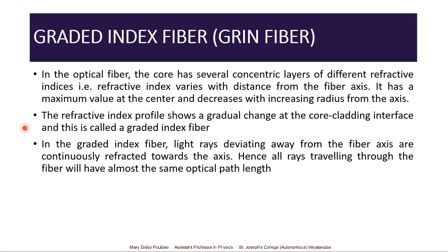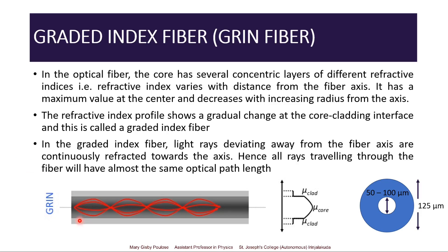In this graded index fiber, light rays deviating from the fiber axis are continuously refracted towards the axis. Hence all the rays traveling through the fiber will have almost the same optical path length. The refractive index of the core is maximum at the center and continuously decreases towards the core-cladding interface — there is no step discontinuity, it is gradually decreasing. When light enters this optical fiber, it will be continuously refracted towards the optic axis, and hence all light rays will have almost the same optical path length.